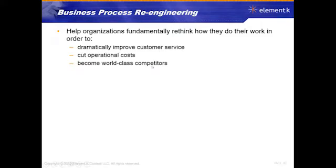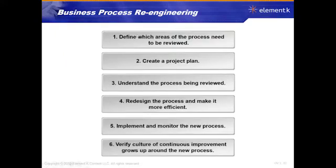One thing you may run into occasionally — and it's very disruptive — is a business deciding they need to completely rethink how they do things: they need to re-engineer their business process. This is extremely radical. In our case, we went from a more traditional SDLC-style development to agile development, re-engineering our whole development process. Organizations might be fundamentally rethinking how they do their work — they may want to dramatically improve products, improve customer service, cut operational costs, or become more competitive. When they do that, we have to define what needs to be re-engineered and have a plan — a whole project — for that.